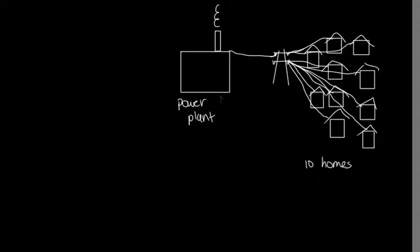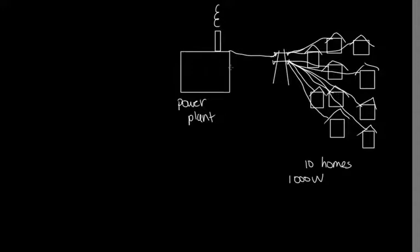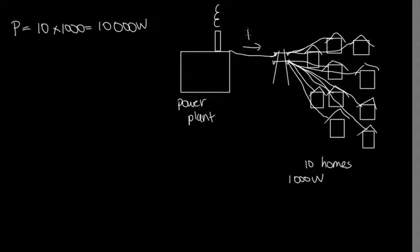Let's look at a simple model to show this efficiency gain. We have a power plant supplying electricity to 10 homes, and we'll assume that each home requires 1,000 watts of electricity. Assuming 100% efficiency for now, so all the electricity produced by the power plant gets to the homes, the total power needed is 10 homes times 1,000 watts, giving us 10,000 watts flowing along this cable.